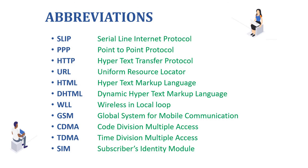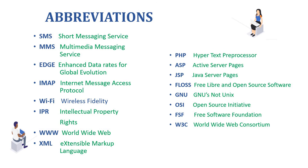Now let's see abbreviations of important network terminologies. SLIP: Serial Line Internet Protocol. PPP: Point-to-Point Protocol. HTTP: HyperText Transfer Protocol. URL: Uniform Resource Locator. HTML: HyperText Markup Language. DHTML: Dynamic HyperText Markup Language. WLL: Wireless in Local Loop. GSM: Global System for Mobile Communication. CDMA: Code Division Multiple Access. TDMA: Time Division Multiple Access. SIM: Subscriber Identity Module. SMS: Short Messaging Service. MMS: Multimedia Messaging Service. EDGE: Enhanced Data Rates for Global Evolution.